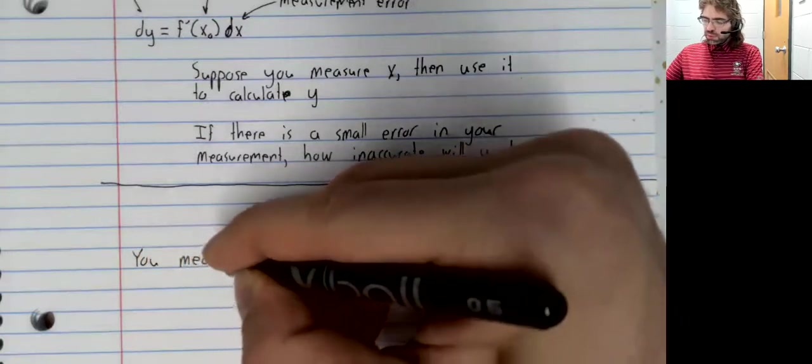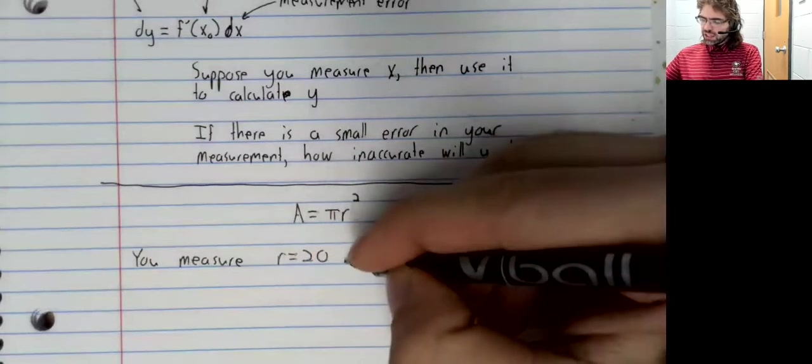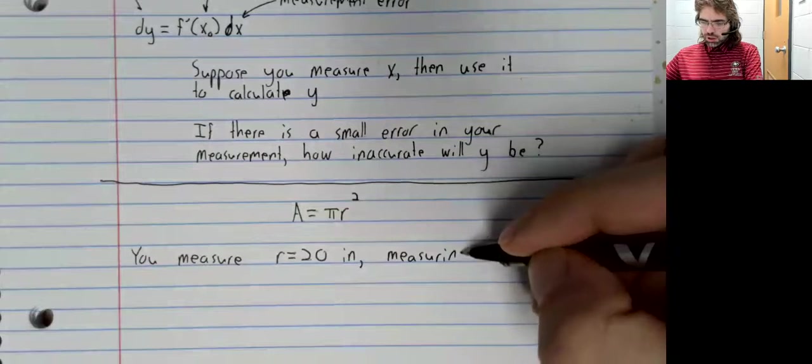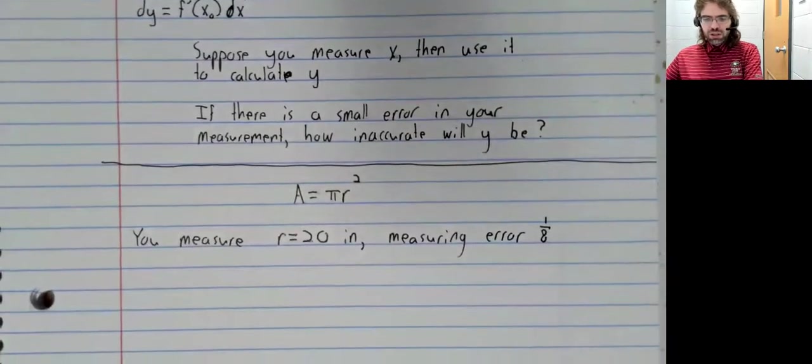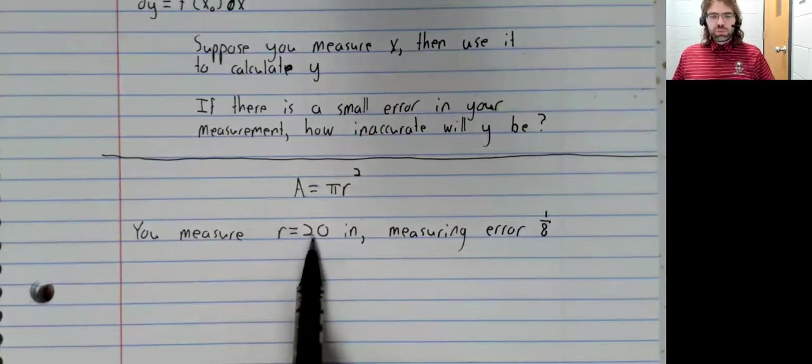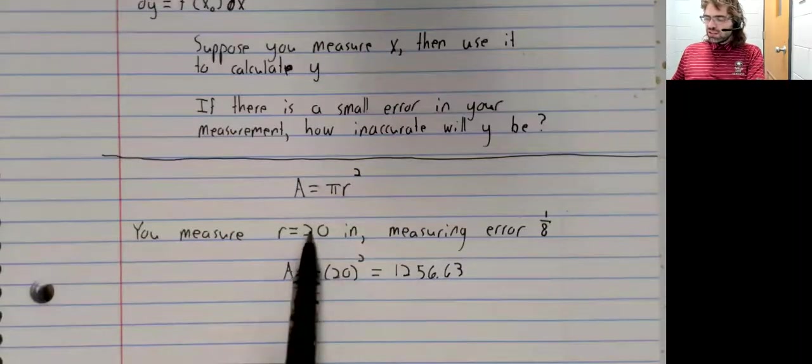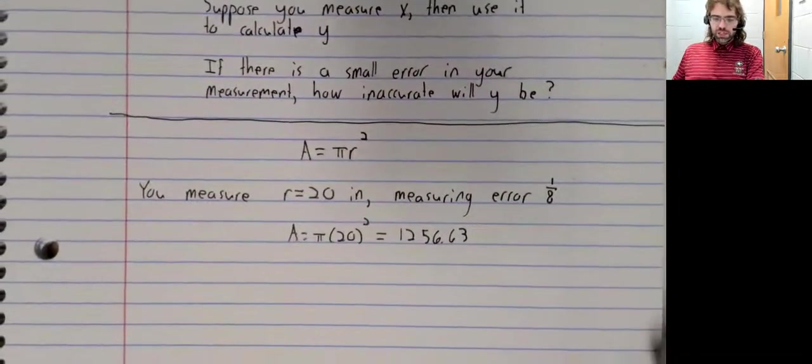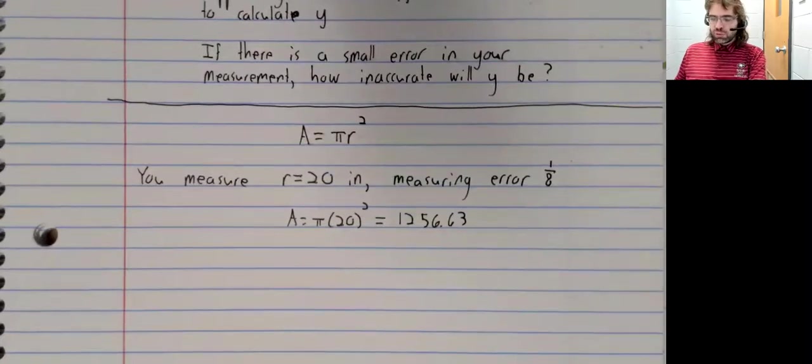So if you want to know the area, suppose that you measure a radius of 20 inches. However, you have measuring error of an eighth of an inch. We can use this 20 to find the area. But since this radius is wrong, this area we calculated is also going to be wrong. And the question becomes, how wrong is it going to be?